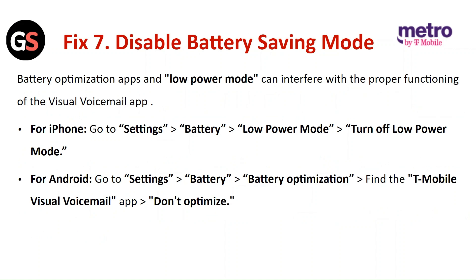Fix 7: Disable battery saving mode. Battery optimization apps and low power mode can interfere with the proper functioning of the Visual Voicemail app. For iPhone, go to Settings, then Battery, then Low Power Mode, and turn off Low Power Mode. For Android, go to Settings, then Battery, then Battery Optimization. Find the T-Mobile Visual Voicemail app and click on Don't Optimize.